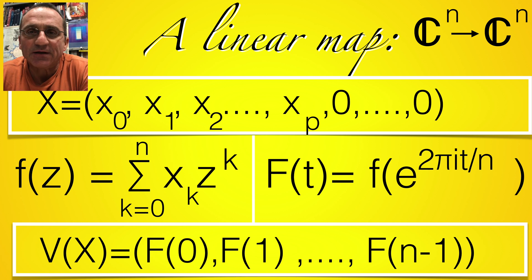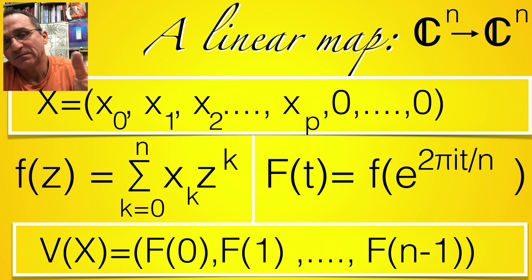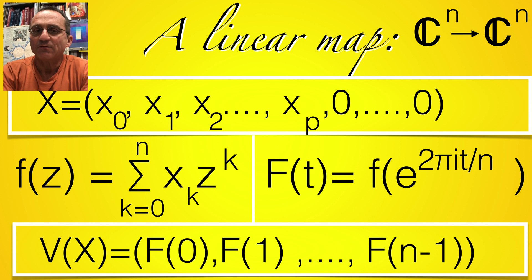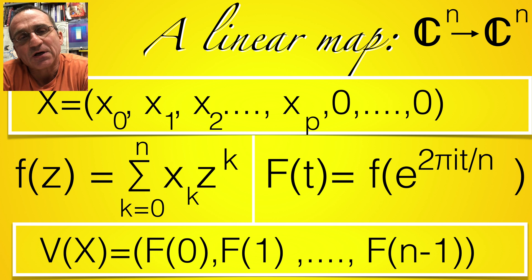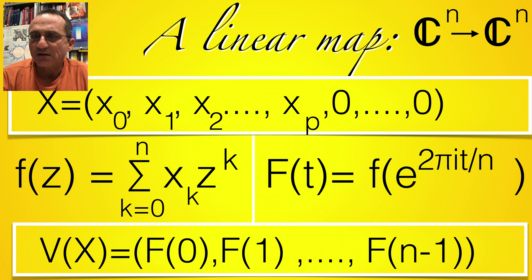The big advantage is that we can use linear algebra. So we have a linear map v, which gives us from x, which is the coefficient vector containing the coefficients of the number x, and then we form this function f and evaluate it at e to the 2πit/n, and then at the integers we get a new vector. So we have a new vector with n components, so this is a map from Cⁿ to Cⁿ, and the n is just so large that in the product you really still fit into that vector space.